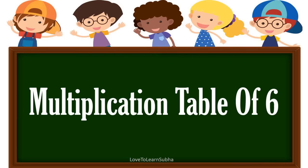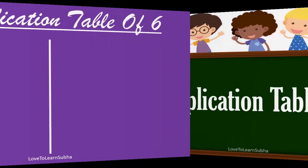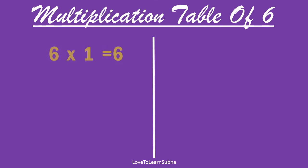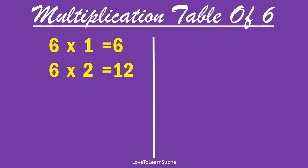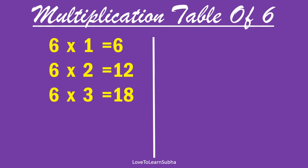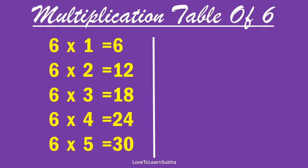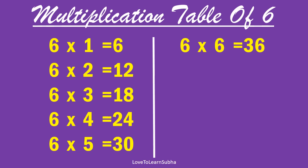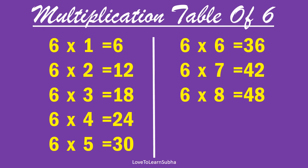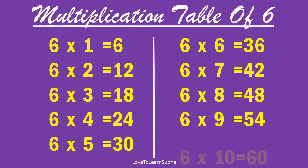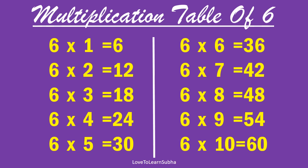Multiplication table of 6. 6 one is 6, 6 two is 12, 6 three is 18, 6 four is 24, 6 five is 30, 6 six is 36, 6 seven is 42, 6 eight is 48, 6 nine is 54, 6 ten is 60.